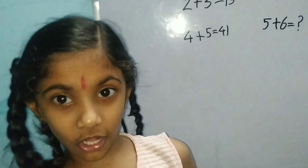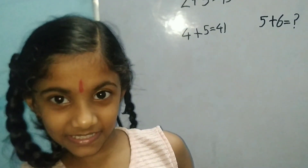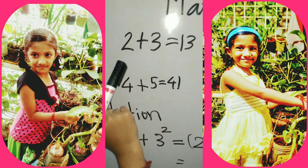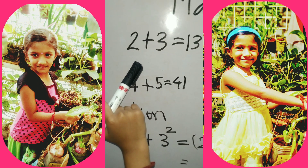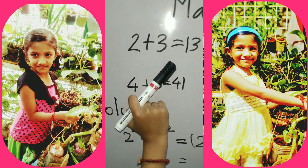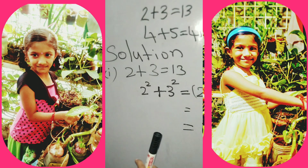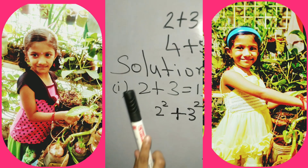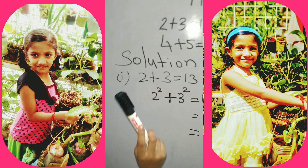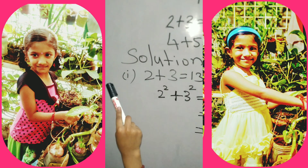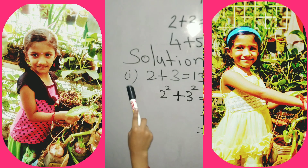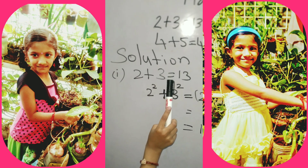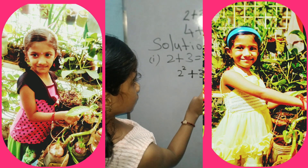Let's solve it. We're going to solve 2 plus 3 equal to 13 first. Number 1: 2 plus 3 equal to 13.